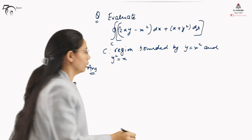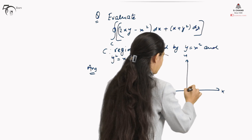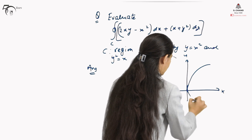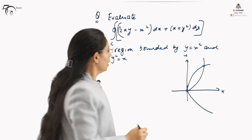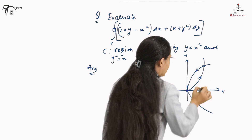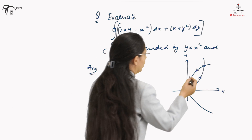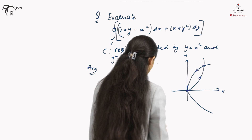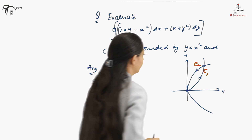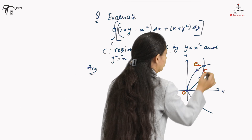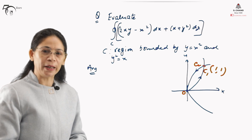First of all, we need to draw this region of integration — that is, we need to draw C. The intersection point is at (1, 1). The positive direction is the counterclockwise direction. This curve is y² = x, labelled c1, and this is x² = y, labelled c2. The origin is (0, 0) and the other point is (1, 1).